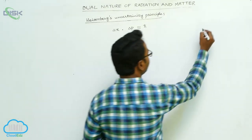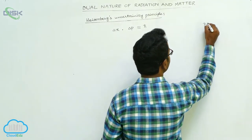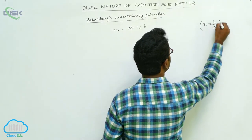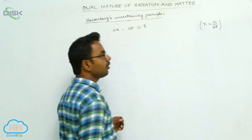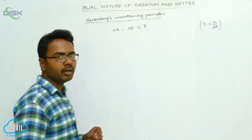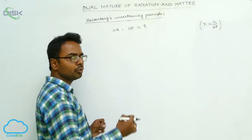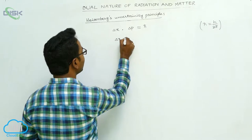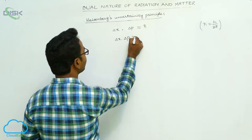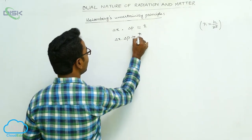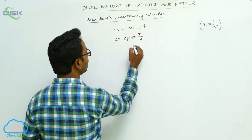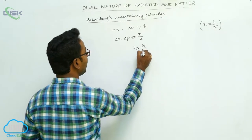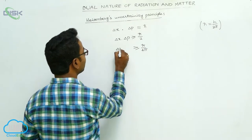Here, h-cut means h by 2 pi. h-cut is equal to h by 2 pi. More precisely, delta x into delta p is greater than or equal to h-cut by 2, or greater than or equal to h by 4 pi, for an electron.